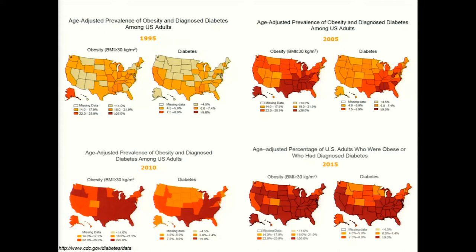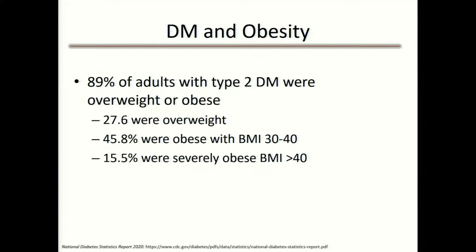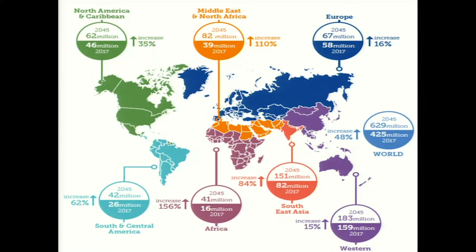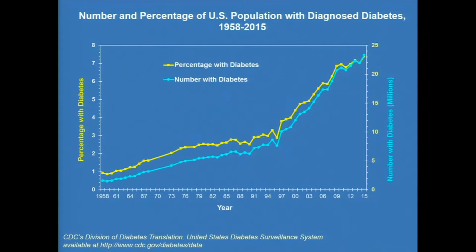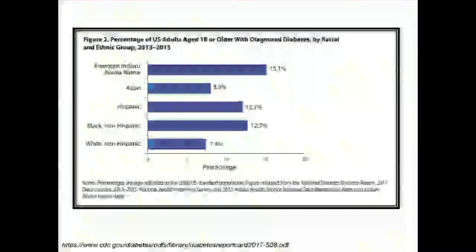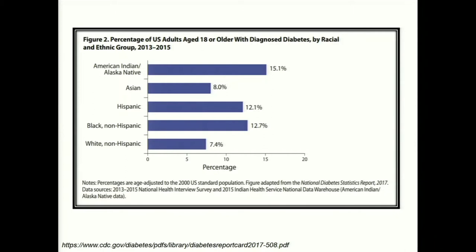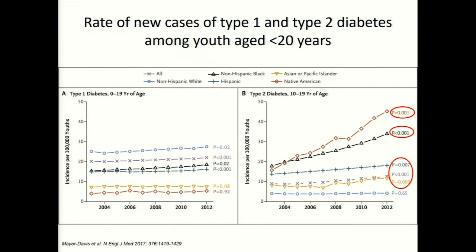About 90 percent of adults with type 2 diabetes are overweight or obese. Almost 50 percent have a BMI of 30 to 40, and about 15 percent are over 40 — very remarkable. Diabetes is increasing globally and throughout the United States. Breaking it down by ethnic group, there are significant differences that may be socioeconomic or genetic in origin.